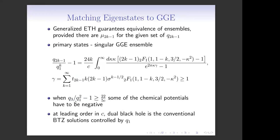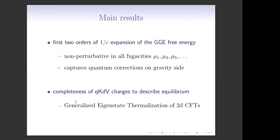Just to save time, let me quickly go through the conclusions. The main result is that we understand the spectrum of KdV charges at leading 1/c order. That allowed us to calculate exactly the free energy of the generalized partition function in the thermodynamic limit and large c, completely non-perturbative in chemical potentials, with a 1/c correction capturing quantum corrections on the gravity side. The second important understanding — which is perhaps not fully complete but we are hopeful it is the right picture — is that two-dimensional CFTs actually satisfy generalized eigenstate thermalization in a conventional form, and the problems we saw before can be resolved.